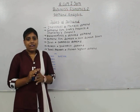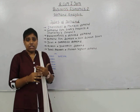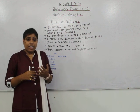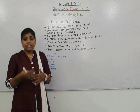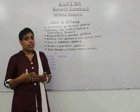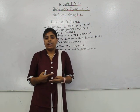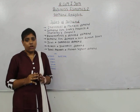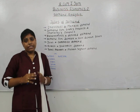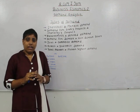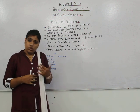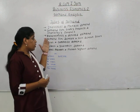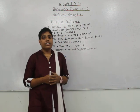The next type is autonomous demand and derived demand. Autonomous demand is demand for those goods and services which are not dependent on the demand of other products. This demand arises to fulfill certain personal needs of the consumer, like demand for food, clothes, and shelter. These demands are not dependent on the demand of another commodity; they arise due to survival needs.